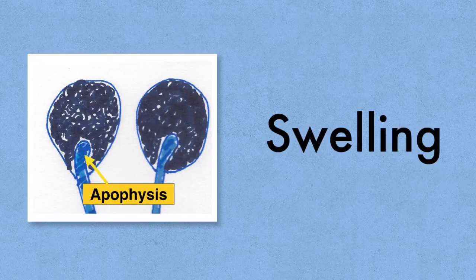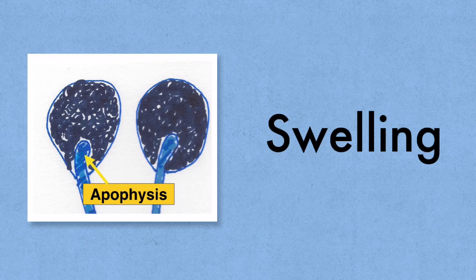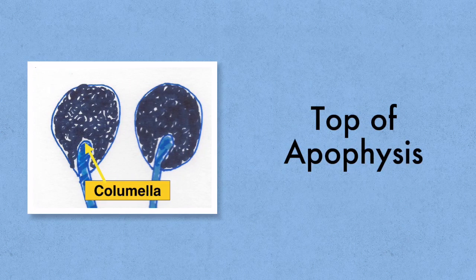Just to draw your attention to two labels that you have to include on your diagram, at the top of the sporangiophore is a swelling known as the apophysis. On the top of the apophysis is the columella.